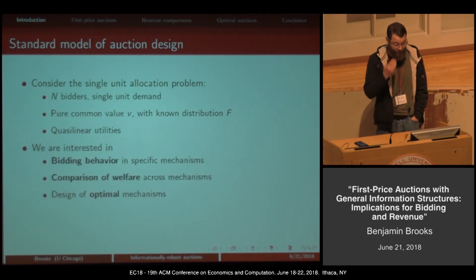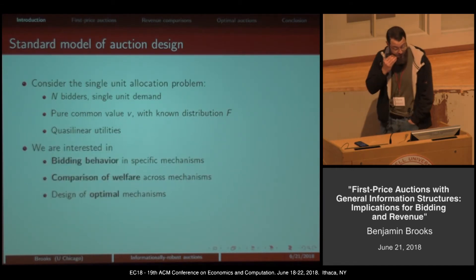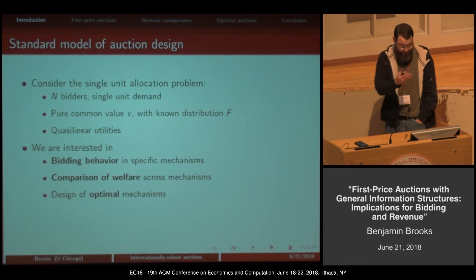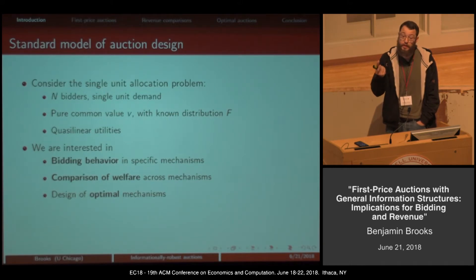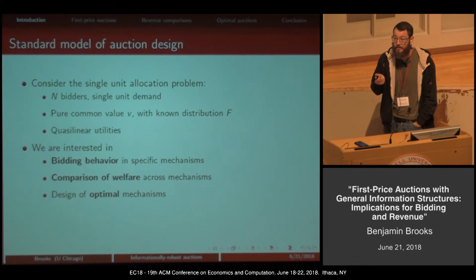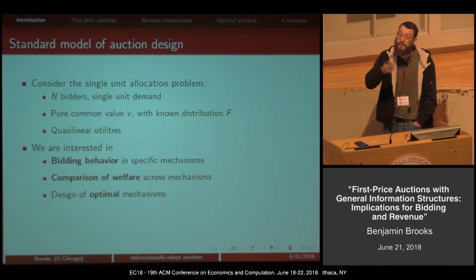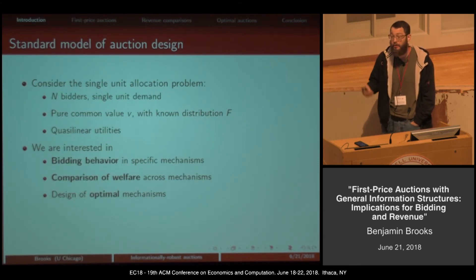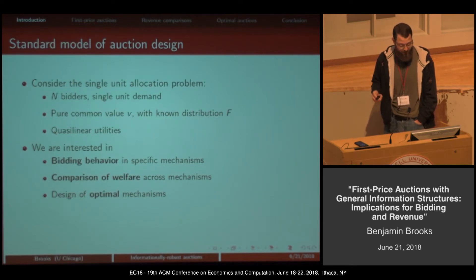These bidders have a pure common value for the good, and we actually know what the distribution of that common value is; otherwise the model is entirely standard. The agents have quasi-linear utilities. Typically in auction theory, we're interested in characterizing bidding behavior in specific mechanisms, making welfare comparisons across auction formats, and determining what are optimal auctions to use — for whatever objective: revenue maximization or social welfare maximization.